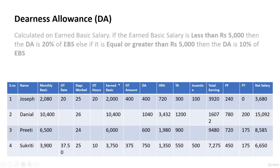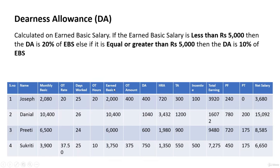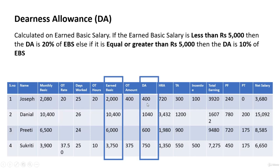The dearness allowance is calculated on the earned basic salary. If earned basic salary is less than ₹5,000, DA is 20% of earned basic salary. If it is equal to or greater than ₹5,000, DA is 10% of earned basic salary. For example, if the salary is below ₹5,000, the earned DA comes to ₹400, calculated at 20%.